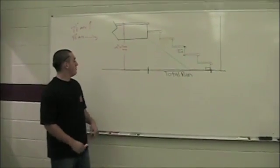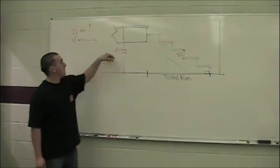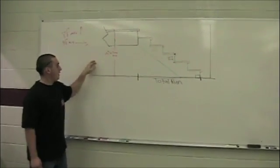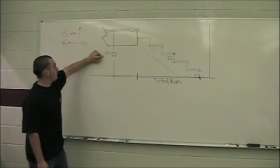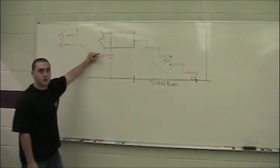First, you have to measure from the bottom of the floor to the top of the second floor. For this measurement right here, we're just going to use 45 and 3/4 inches for our total rise.